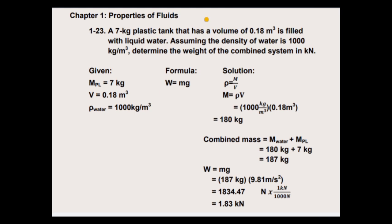Chapter 1, Properties of Fluids, from the book of Unison Gel, problem 1-23. A 7 kilogram plastic tank that has a volume of 0.18 cubic meter is filled with liquid water. Assuming the density of water is 1000 kilogram per cubic meter, determine the weight of the combined system in kilonewtons.